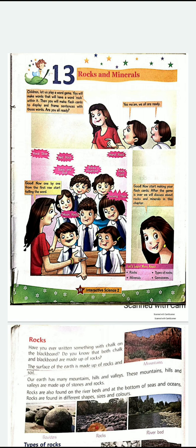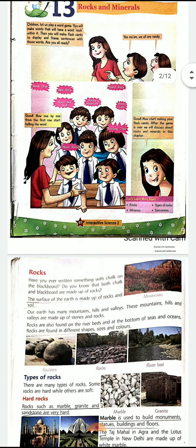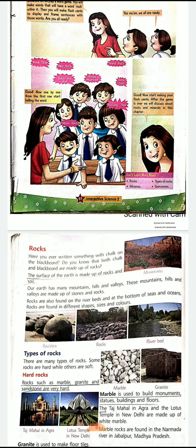Now let's recall what we have studied. We were doing Chapter 13, Rocks and Minerals, in which we study about rocks, minerals, types of rocks, and gemstones. We studied that rocks are of two types: hard rocks and soft rocks. There are different shapes, sizes, and colors of rocks.